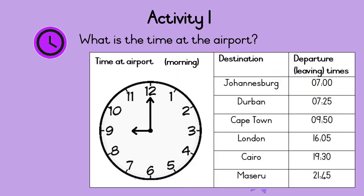What is the time at the airport? This clock shows the time at the airport in the morning. The hour hand points to 9, and the minute hand points to 12, which means 9 hours and no minutes.